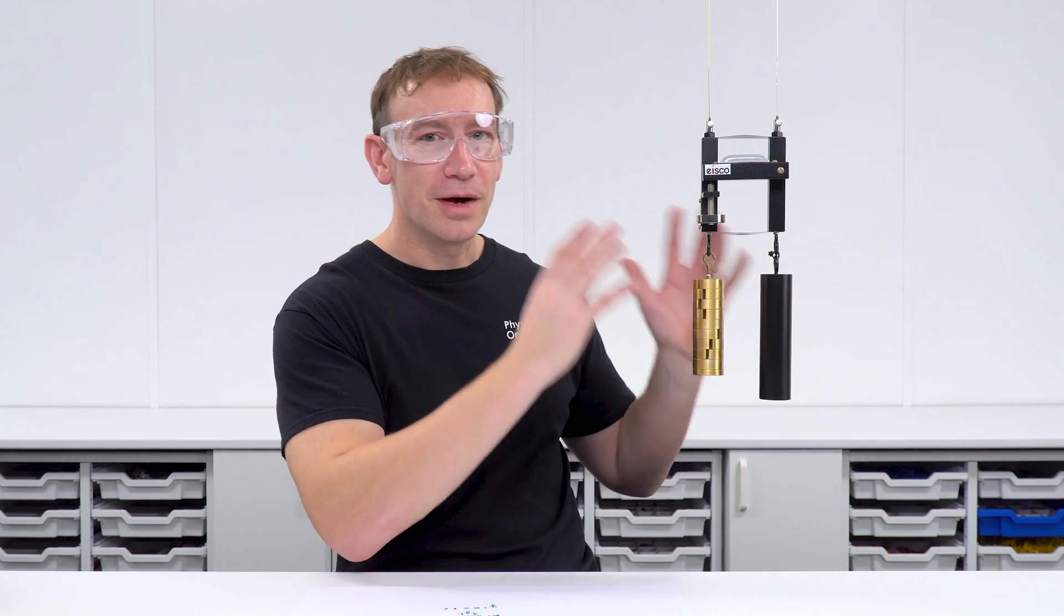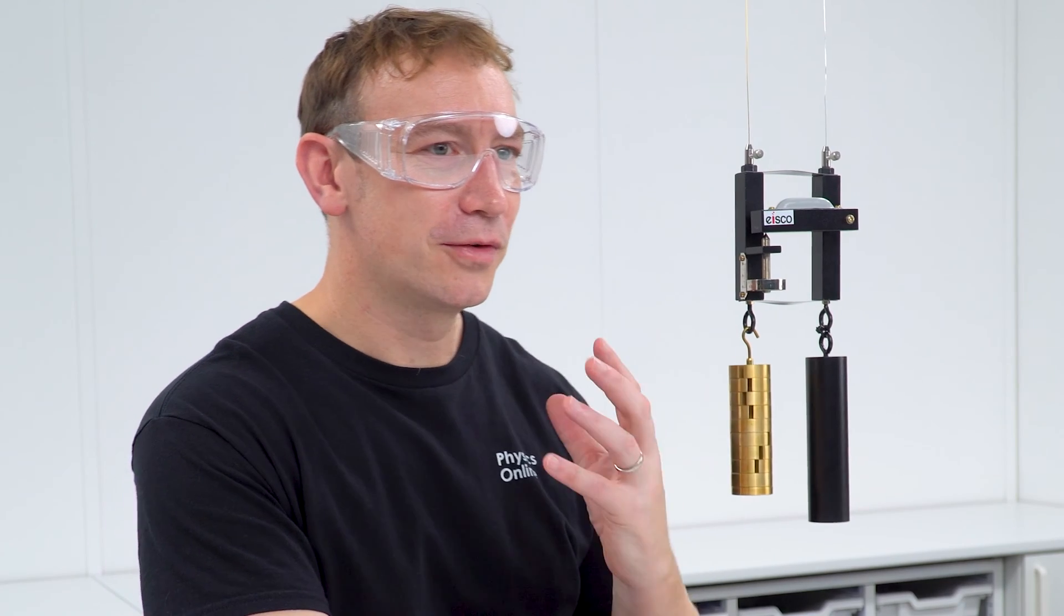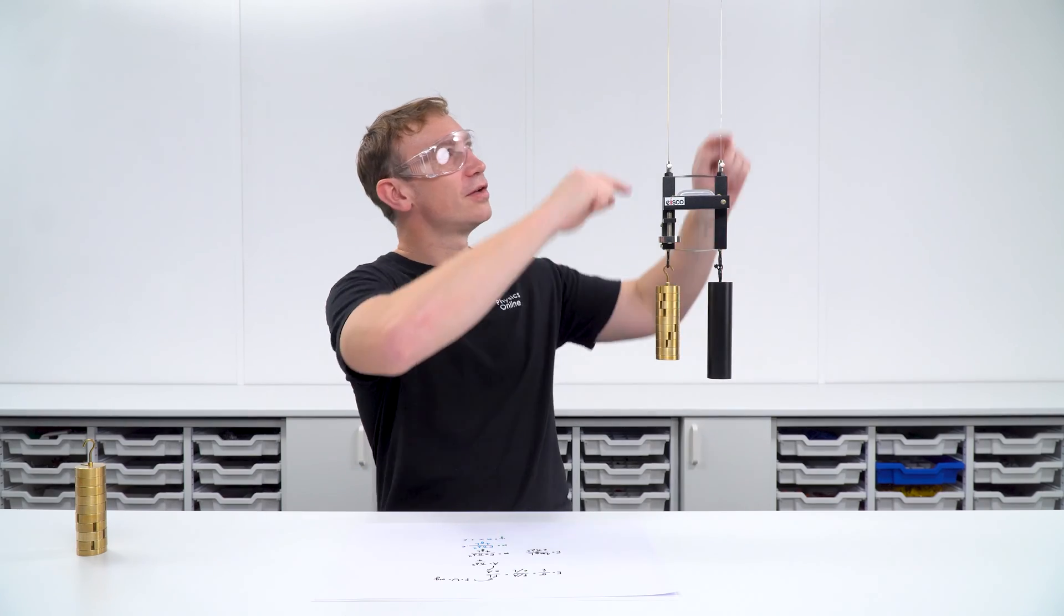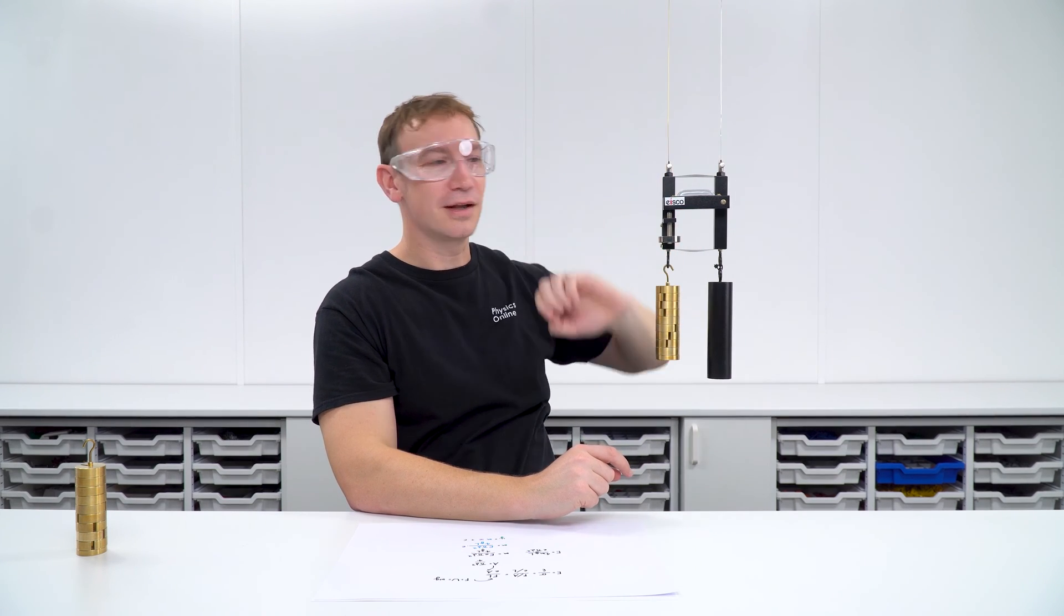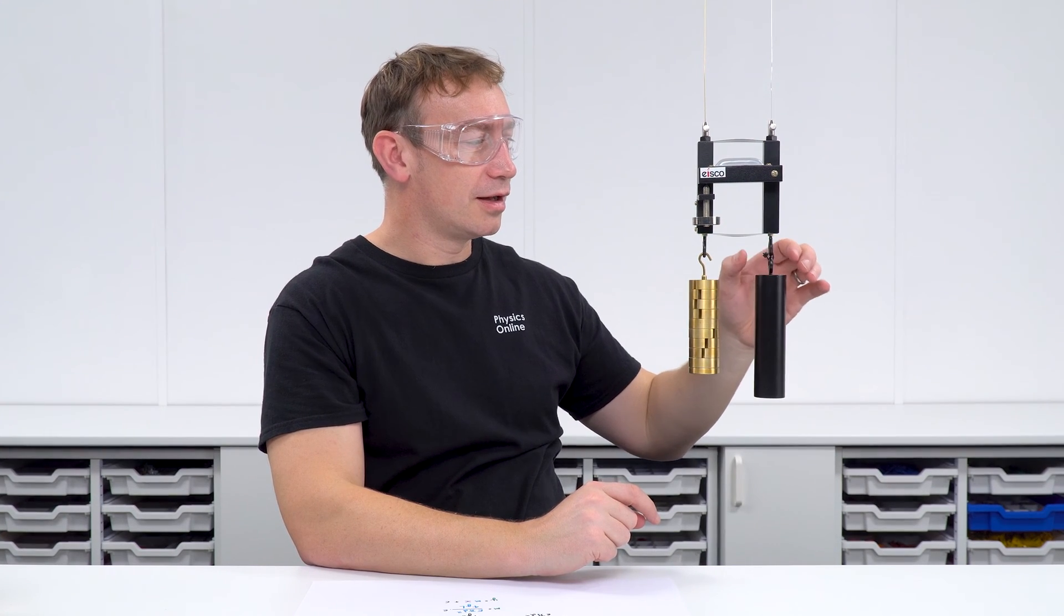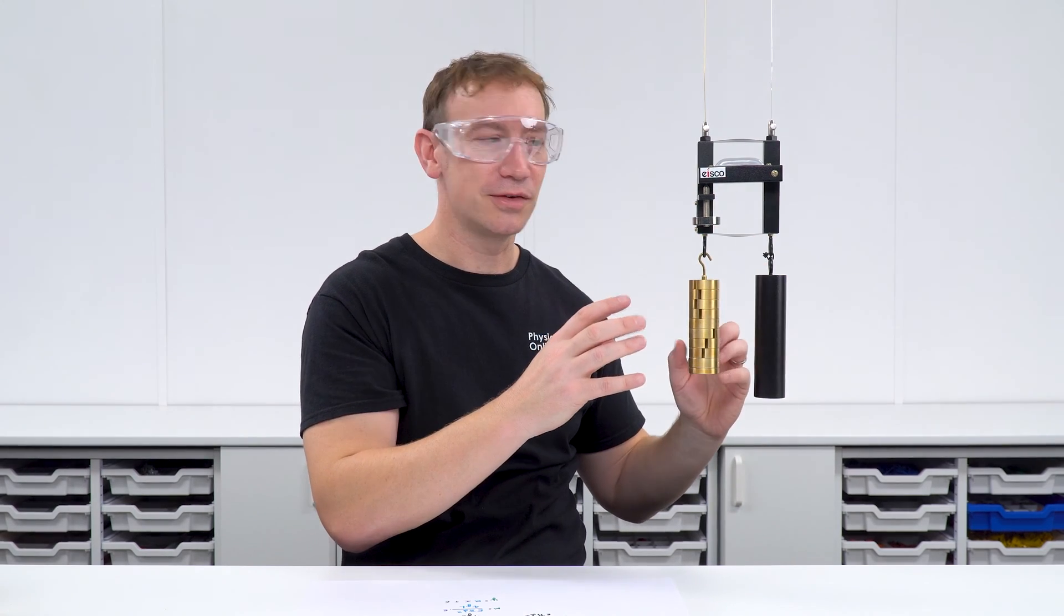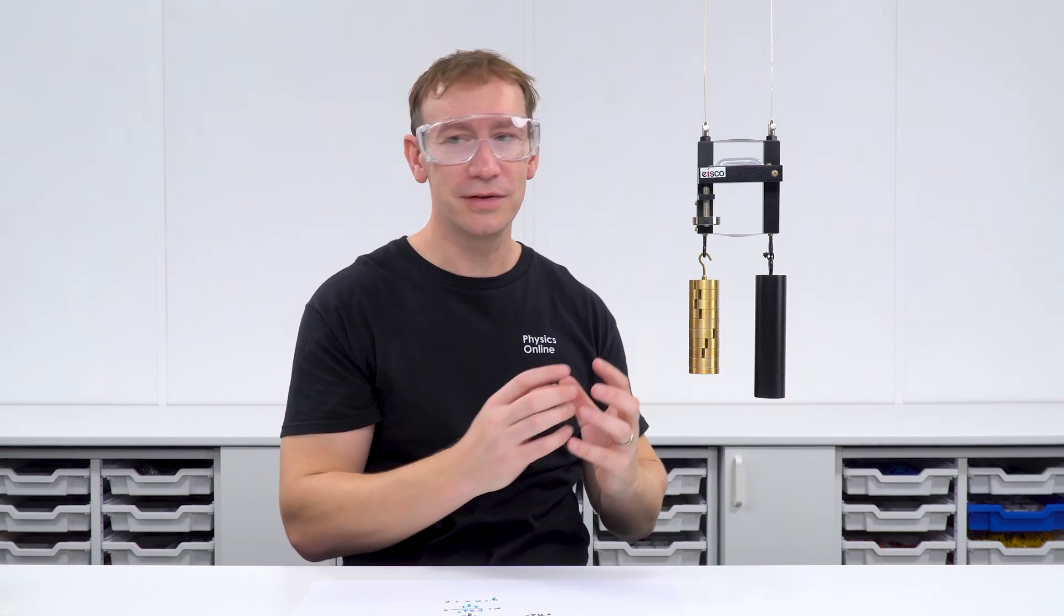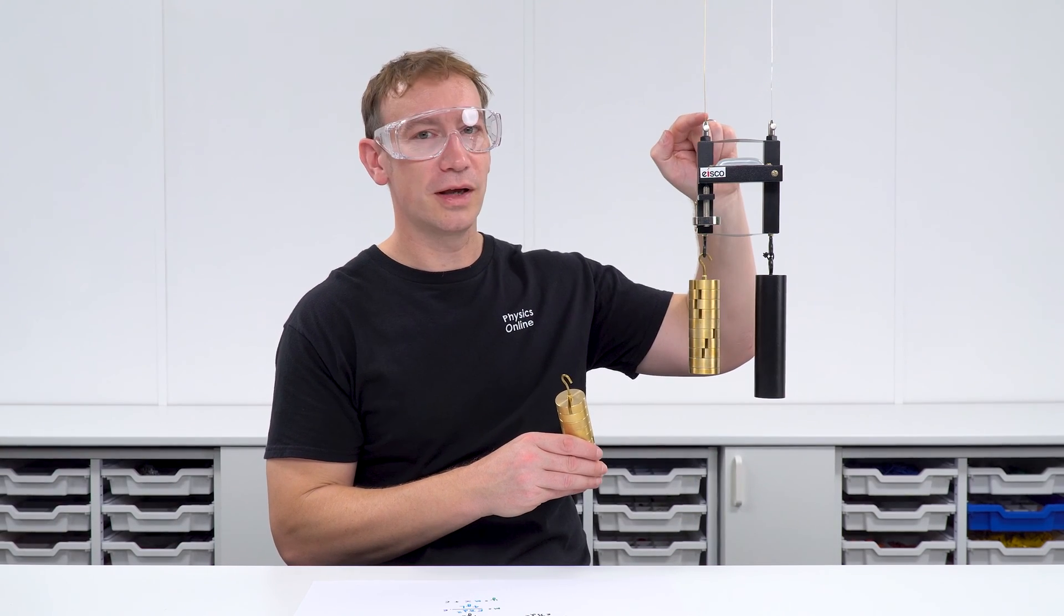This mechanism overcomes that because we have a different way of measuring the extension. This is called Searle's apparatus. We have two vertical wires that are fixed into a secure point on the ceiling. We've got a load which is equal on both of them and this is just going to keep the wires under tension and what we can then do is we can apply a force just to this wire over here.